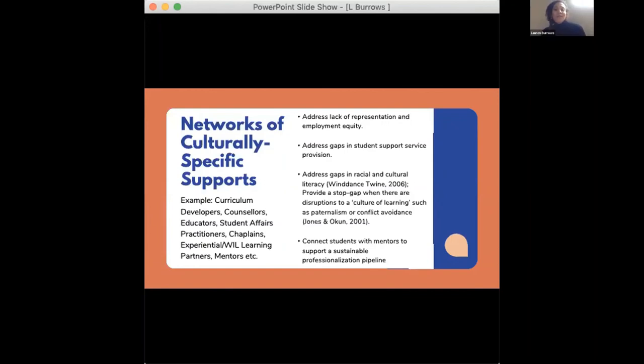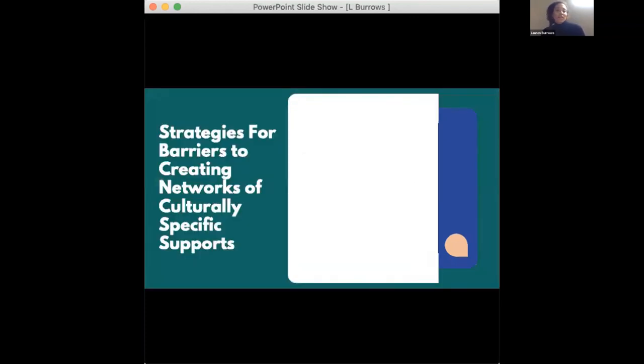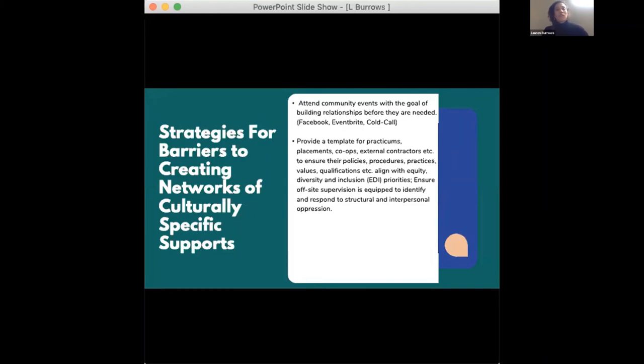Connect students with mentors to support a sustainable professionalization pipeline. Some strategies for recruiting networks of culturally specific supports start with not knowing any of them. Some recommendations are to attend community events with the goal of building relationships before they are needed. Great ways to do that are to look at equity, diversity and inclusion events on Facebook Eventbrite or even cold call organizations you would like to learn more about. Provide a template for practicums, placements, co-ops, external contracts to ensure their policies, procedures, practices, qualifications align with equity, diversity, inclusion priorities.